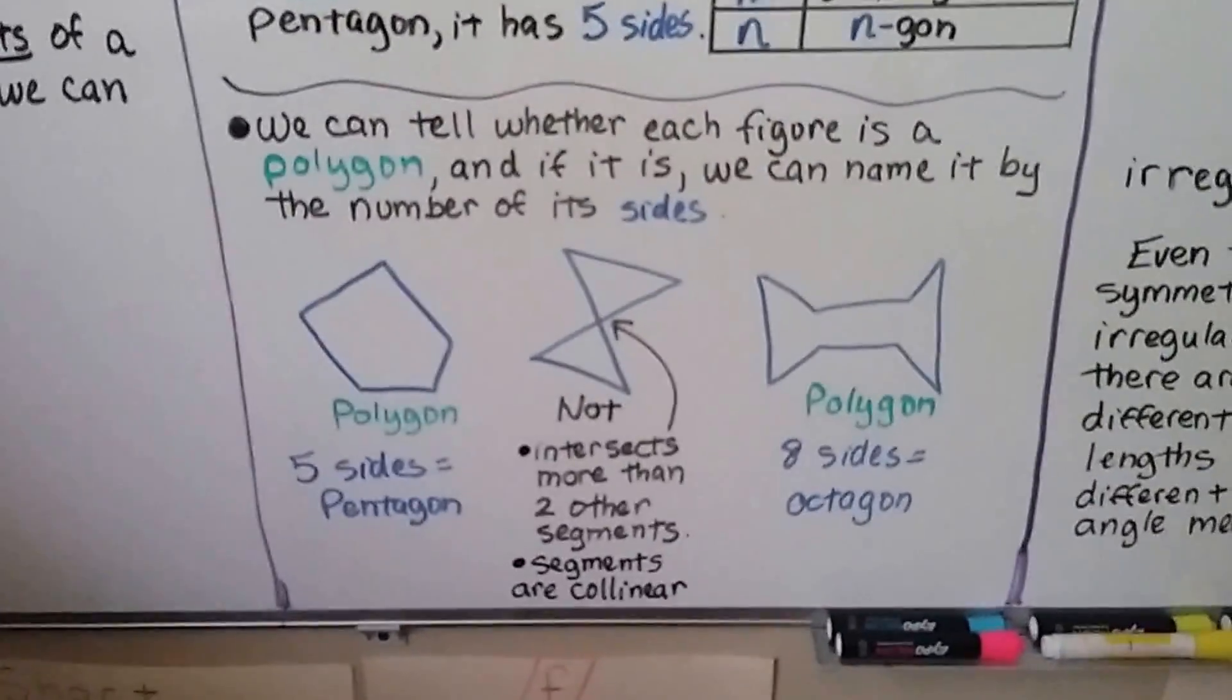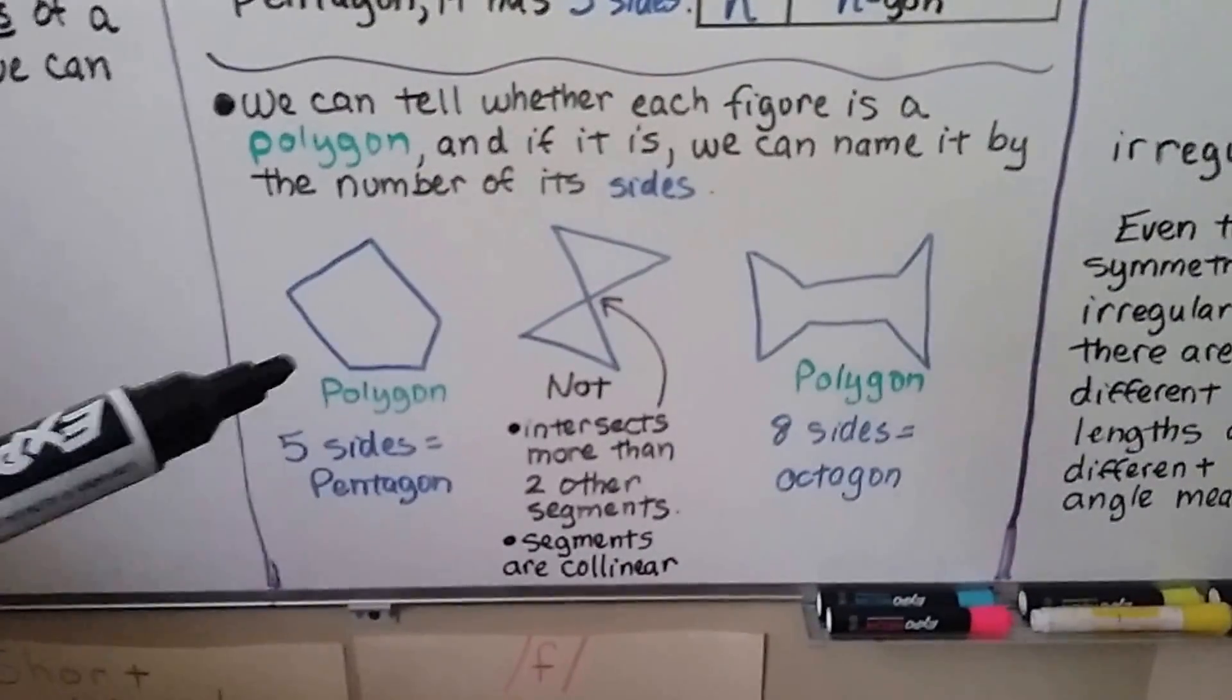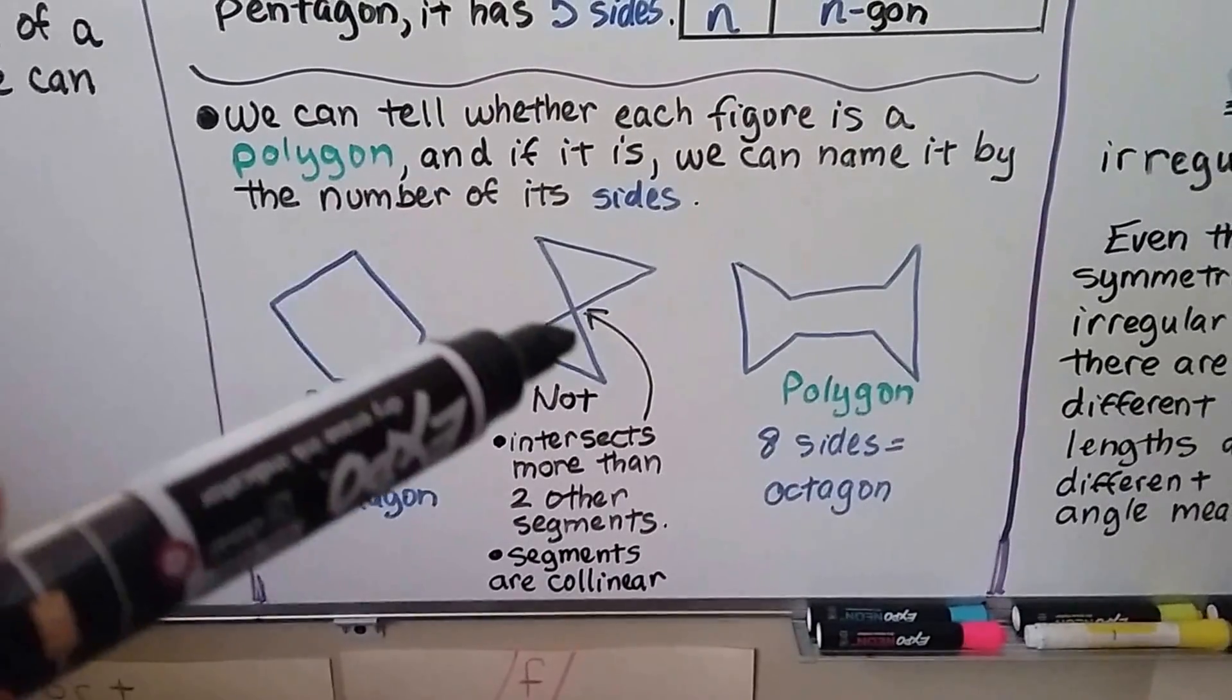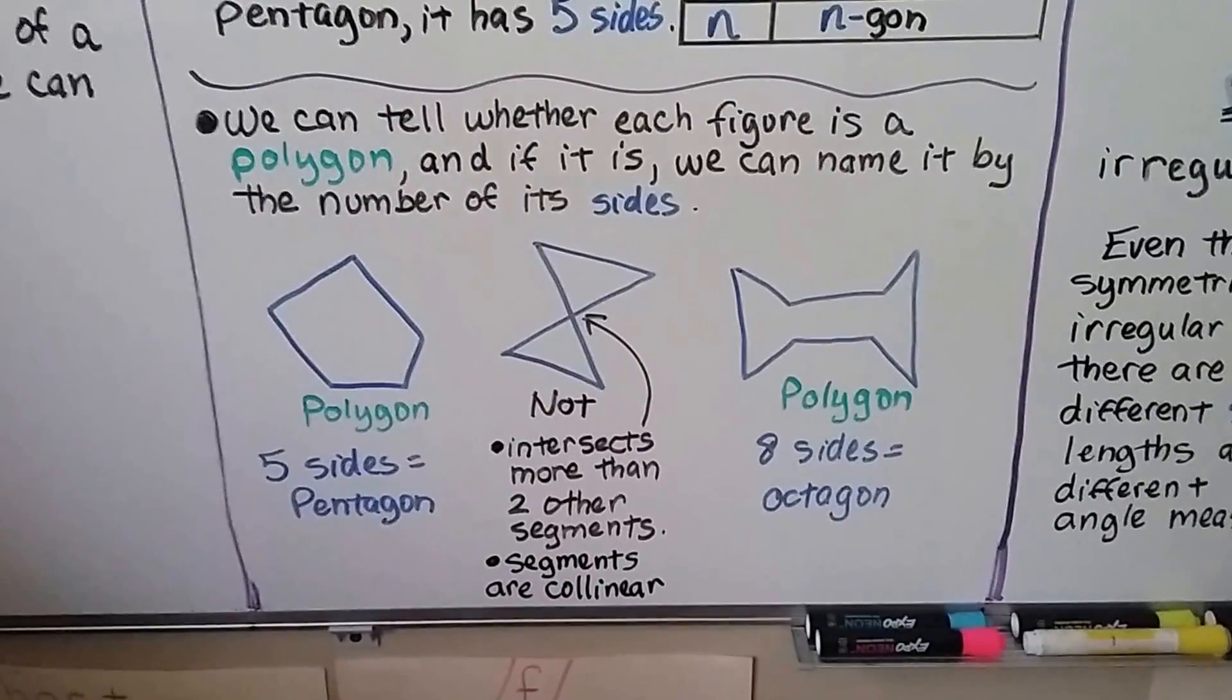This is not a polygon. It intersects more than two other segments, and this segment is collinear with this segment. That's not allowed.